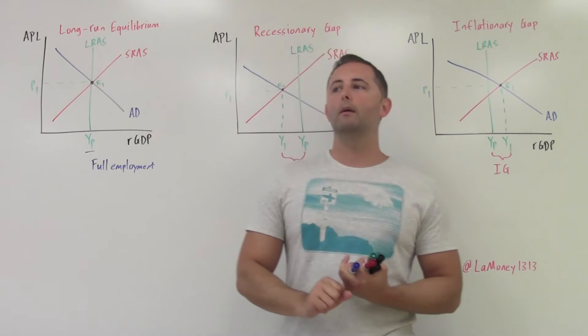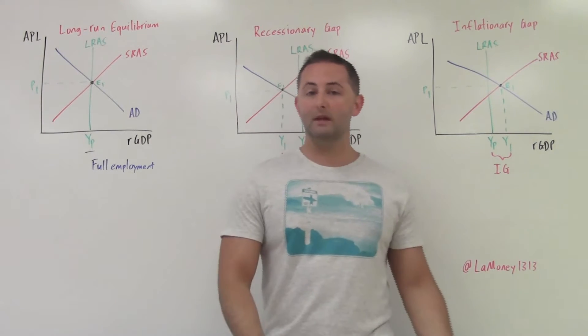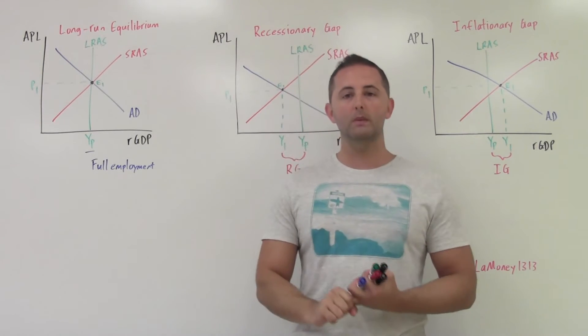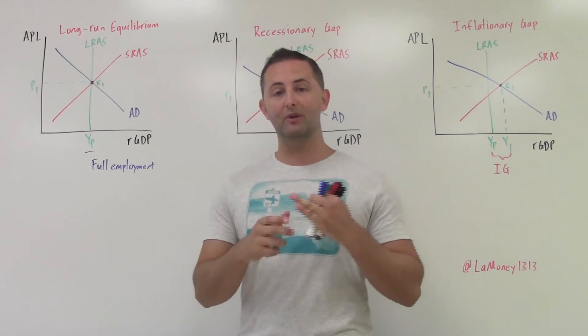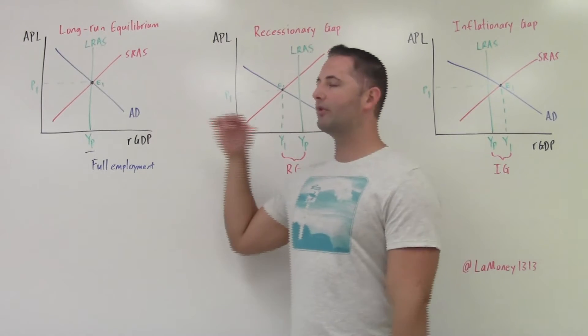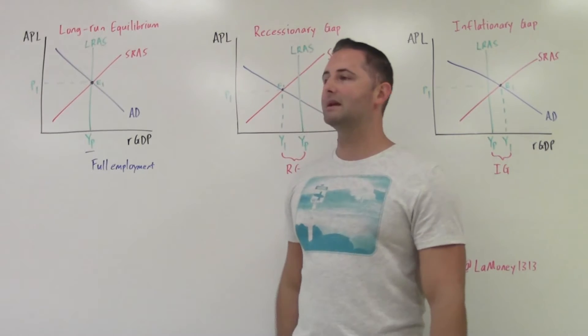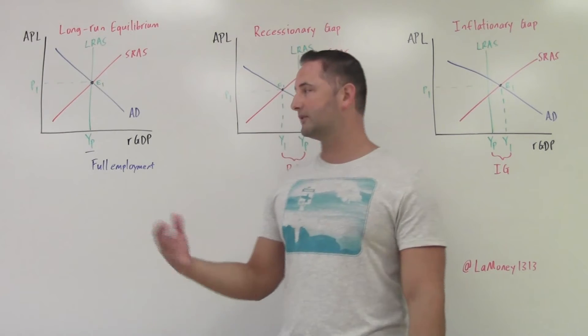So that creates structural unemployment. Frictional unemployment is time spent in a job search. So we have those two types. We add them together, and that equals our natural rate of unemployment. Natural rate of unemployment is the same as this. It is full employment.